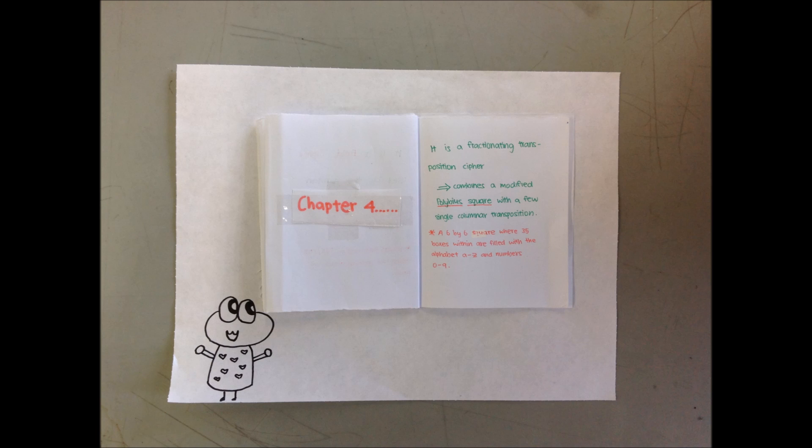This cypher is a fractionating transposition cypher, which combines a modified polybius square with a single columnar transposition. The polybius square is a 6x6 square, and in the square, there are 36 boxes that are filled with the alphabet A to Z and the numbers 0 to 9.